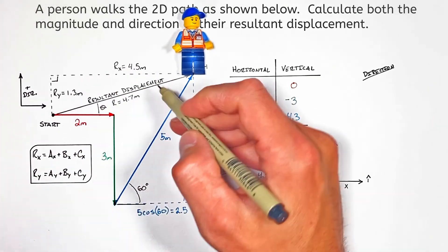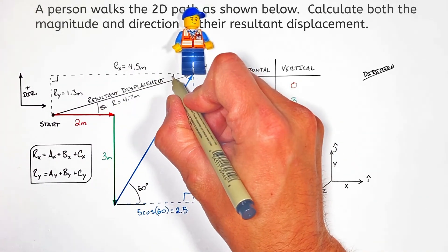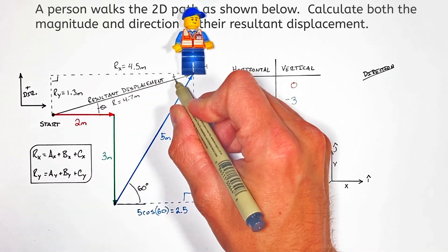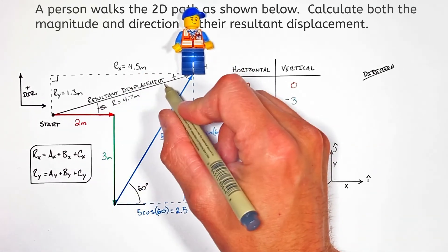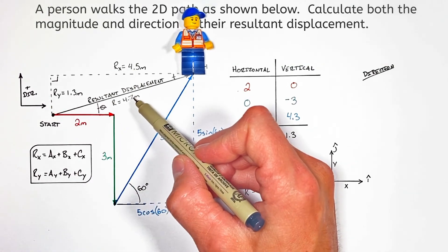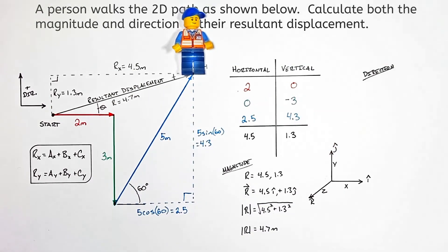We're looking for this angle, which also happens to be that angle right there—these are alternate interior angles. We know three sides of our right triangle and we can solve for the angle.